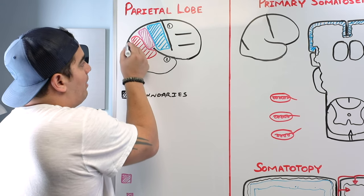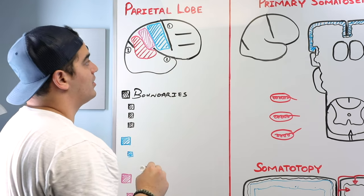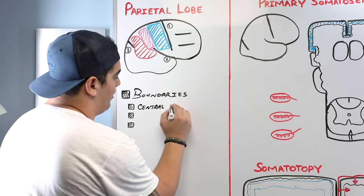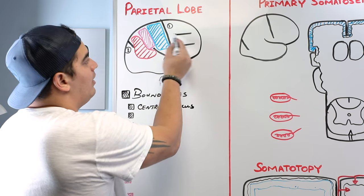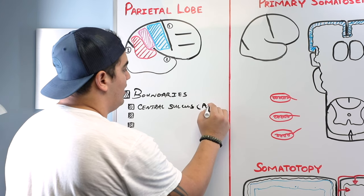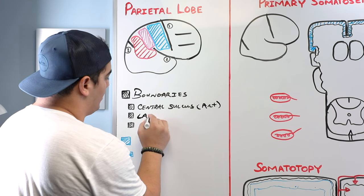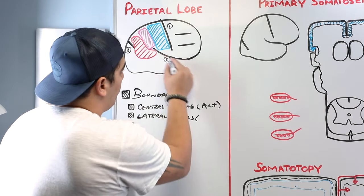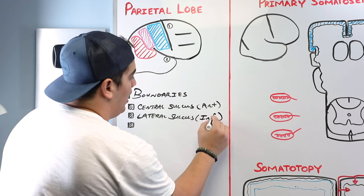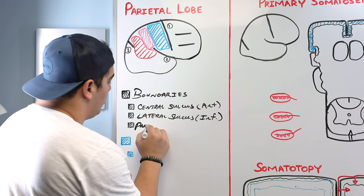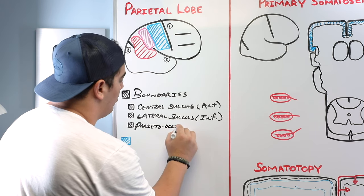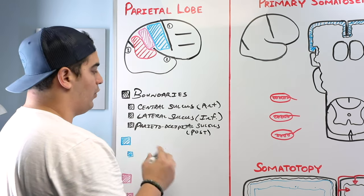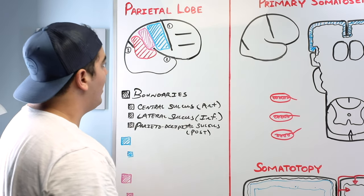And then we have a posterior boundary, which is formed by the parieto-occipital sulcus. The central sulcus separates the parietal lobe from the frontal lobe, forming the anterior boundary. The lateral sulcus separates the parietal lobe from the temporal lobe, forming the inferior boundary. And the parieto-occipital sulcus forms the posterior boundary, separating the occipital lobe from the parietal lobe. That covers our boundaries.